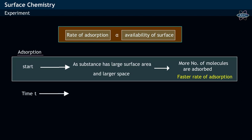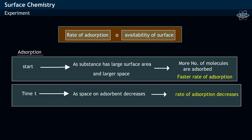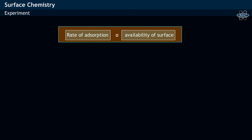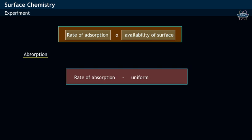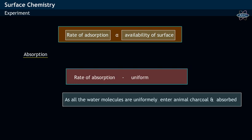After the passage of time, as the space on the adsorbent decreases, the rate of adsorption gradually decreases. Whereas in the absorption process, the rate of absorption is uniform, as all the molecules uniformly enter and are absorbed into the substance.